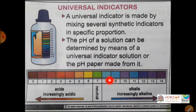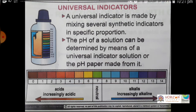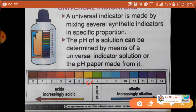If pH value is increasing above 7, basic nature increases; if decreasing below 7, acidic nature increases. For example, of two acidic solutions — one with pH 6 and one with pH 2 — the solution with pH 2 is the stronger acid. In case of bases, of two solutions with pH 10 and pH 14, the solution with pH 14 is more basic.